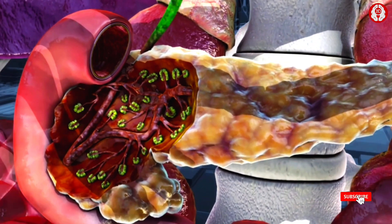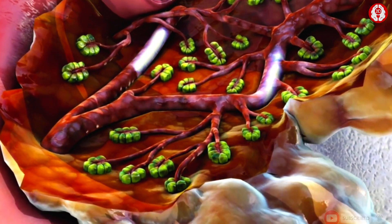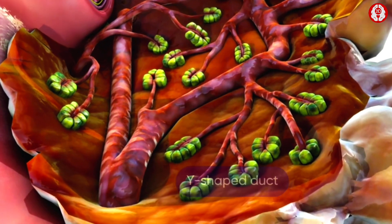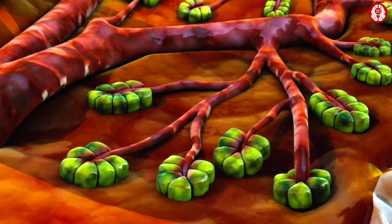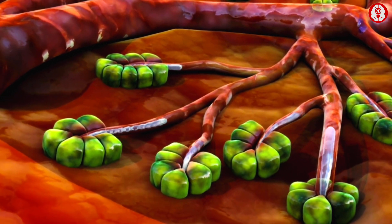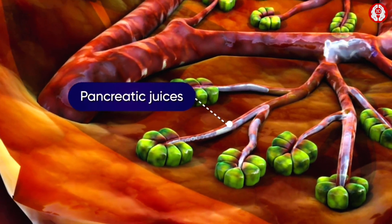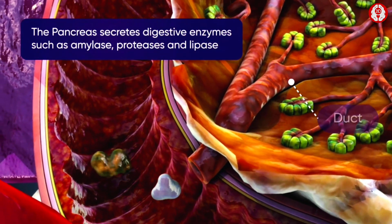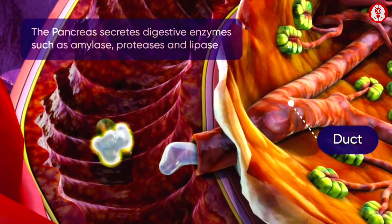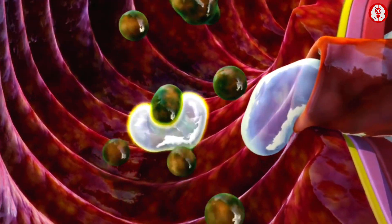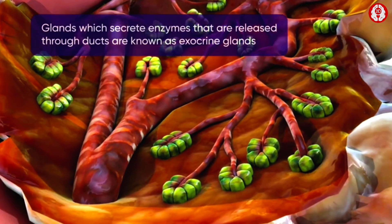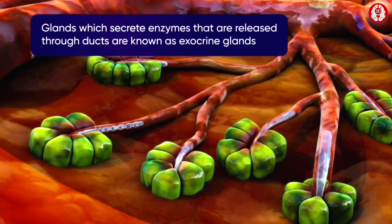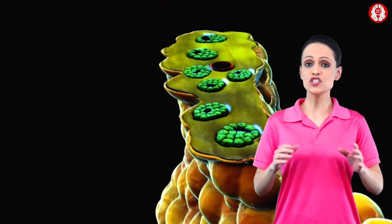A sectional view of the pancreas shows that it is connected to the duodenum by the Y-shaped duct. A magnified view shows the pancreatic cells releasing digestive juices known as pancreatic juices. These juices contain enzymes which are carried through a duct into the duodenum, where they act on food substances and break them into simpler forms. Such glands secreting enzymes released through ducts are known as exocrine glands.